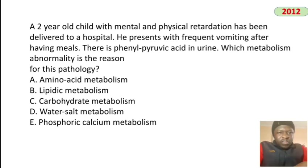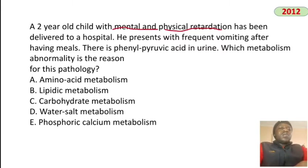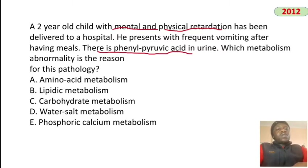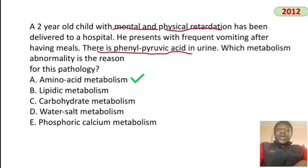A two-year-old child with mental and physical retardation presents with frequent vomiting after meals and phenylpyruvic acid in urine. This indicates PKU — a disorder of phenylalanine metabolism. The answer is amino acid metabolism, not lipid, carbohydrate, or water-salt metabolism.